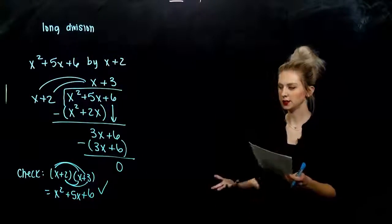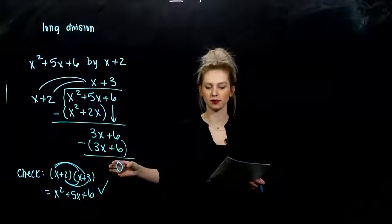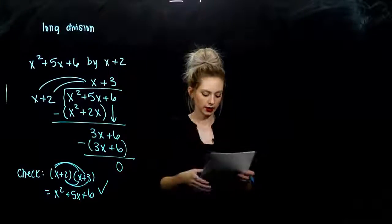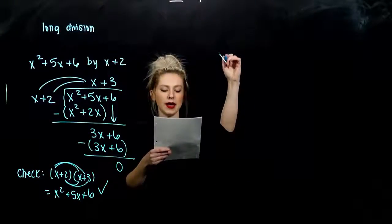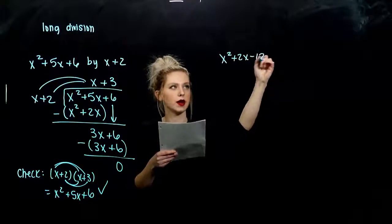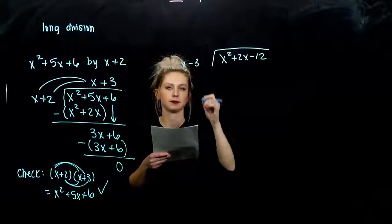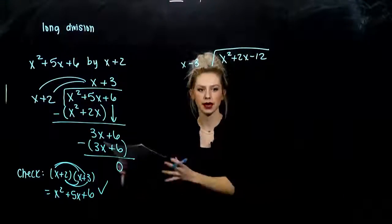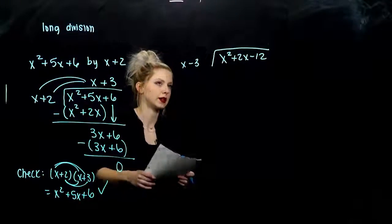Alright. Sometimes we might not have a remainder of zero. If we hit a 0, we know that we're done. But we'll look at another case where it's not going to be 0. I want to divide x squared plus 2x minus 12 by x minus 3. The first one goes on the inside, what I'm dividing by goes on the outside.